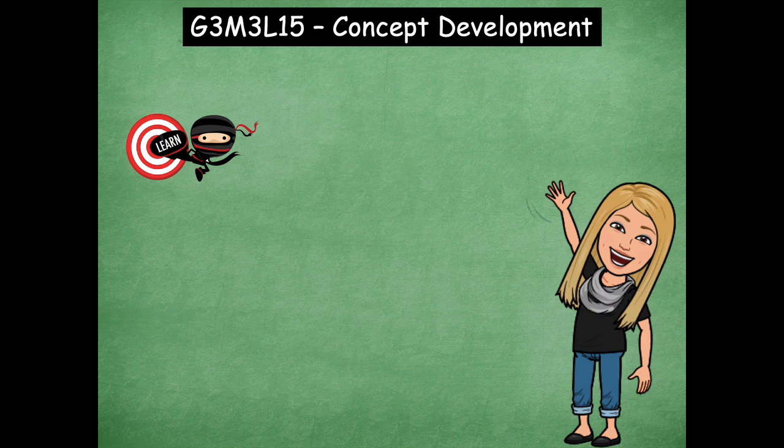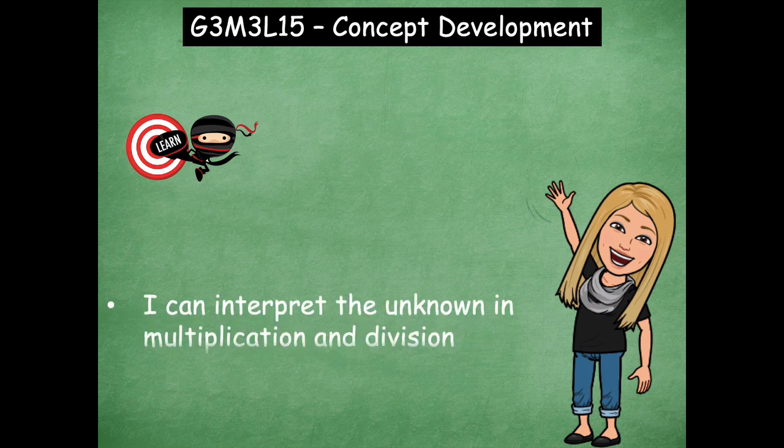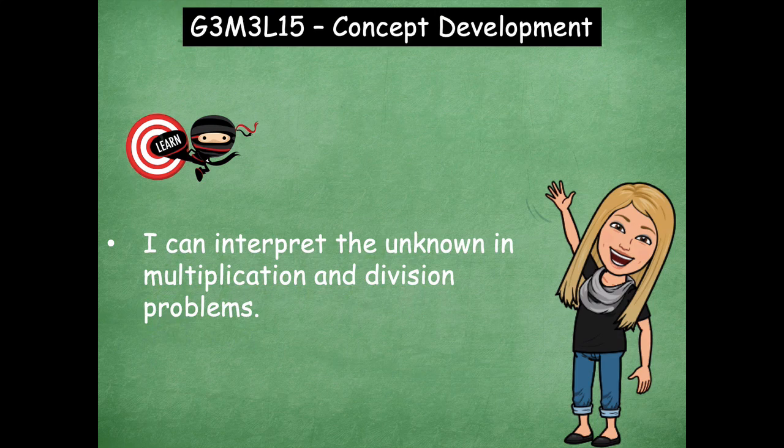Hey boys and girls, it's Mrs. Walker. For our lesson today we're going to talk about how we can interpret the unknown. The unknown is just where we're talking about finding the missing piece of information, so we're going to be solving for something that we don't know. Our learning goal for today says: I can interpret the unknown in multiplication and division problems. We're also going to talk about how we can draw models to help us.